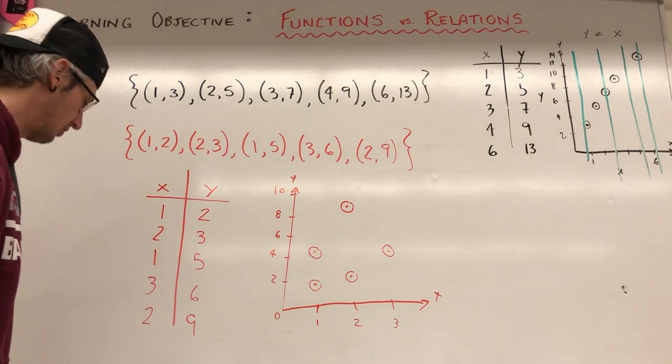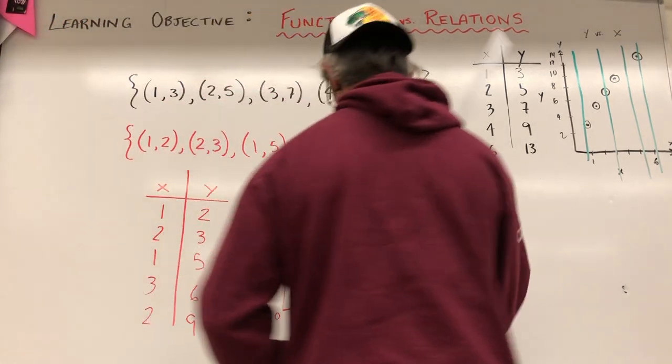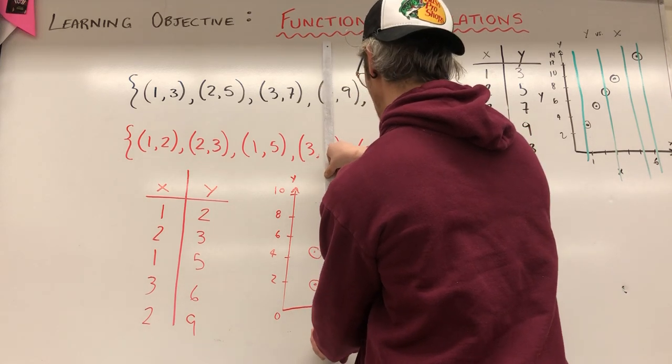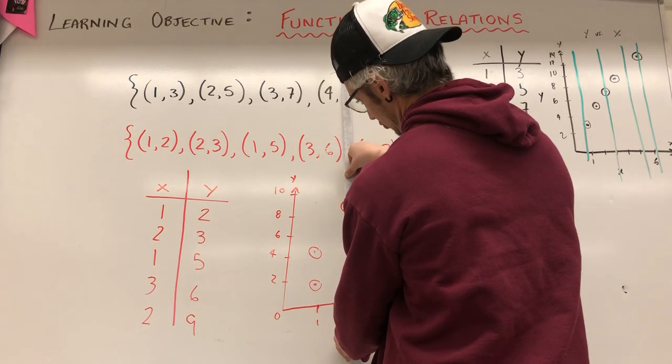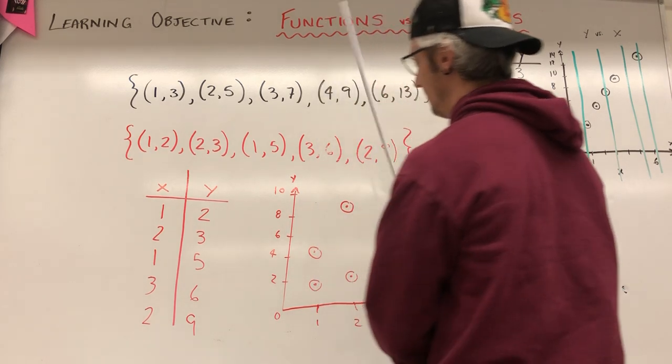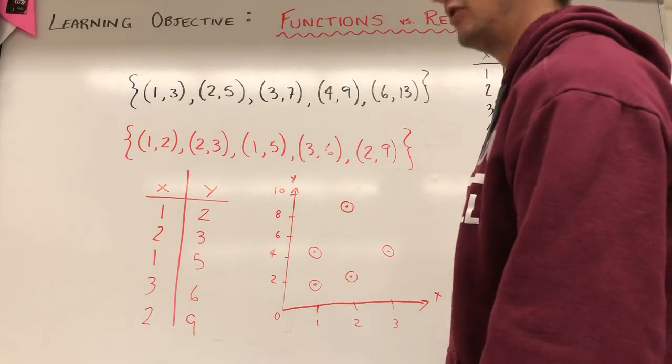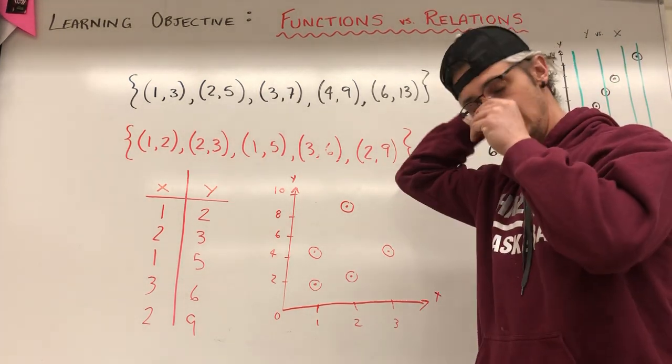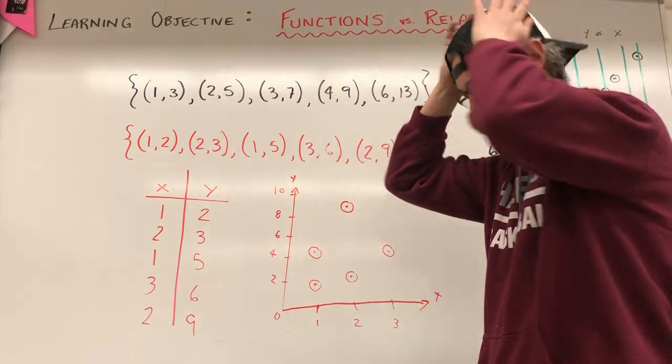Now, if I do my vertical line test. Oh, look at this. My vertical line intersects two points here, if there's only one, but here, boom and boom. So that confirms the fact that we have a function and not a relation.